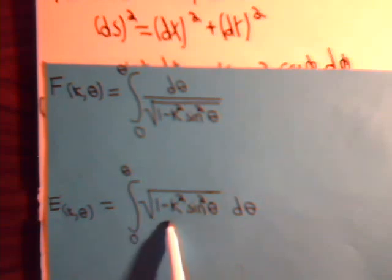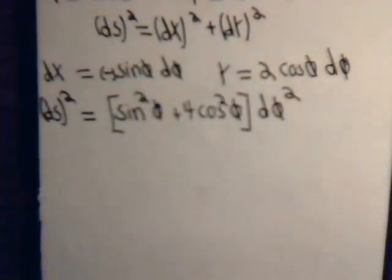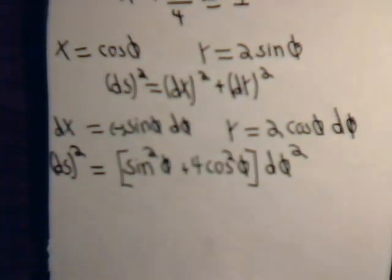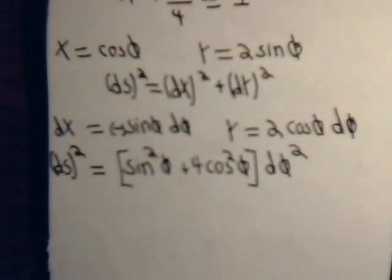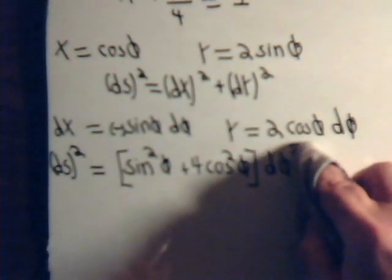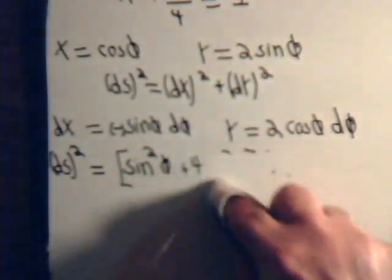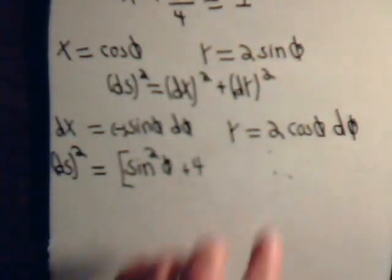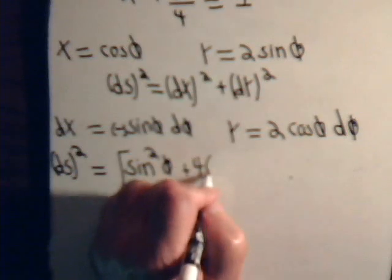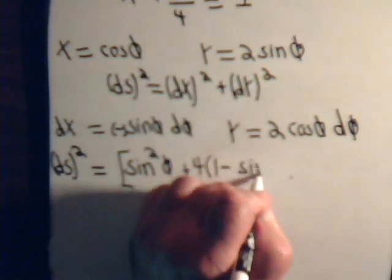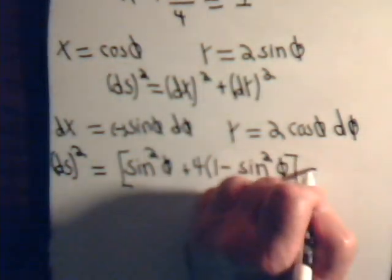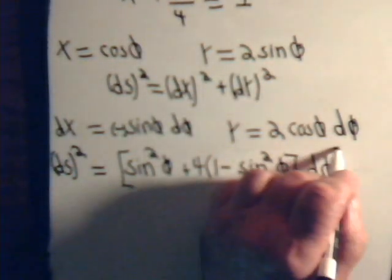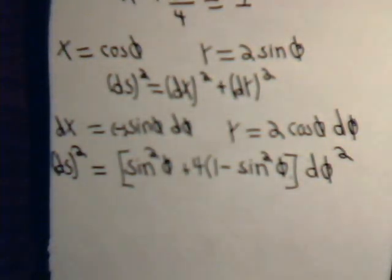Let's go back to here. We can replace the cosine squared with 1 minus the sine squared, so let's do that.